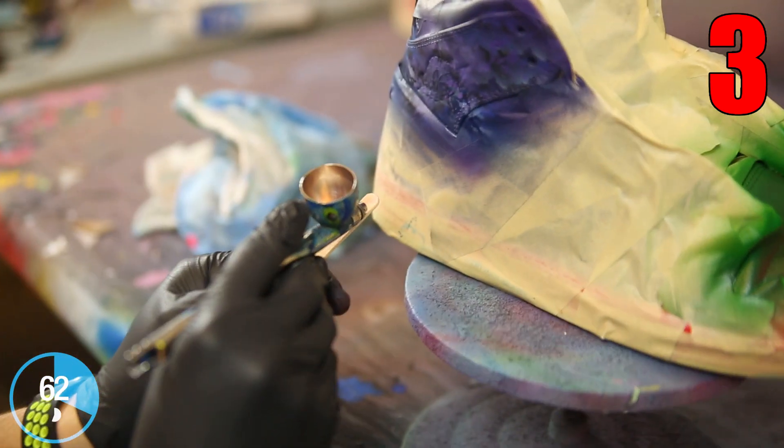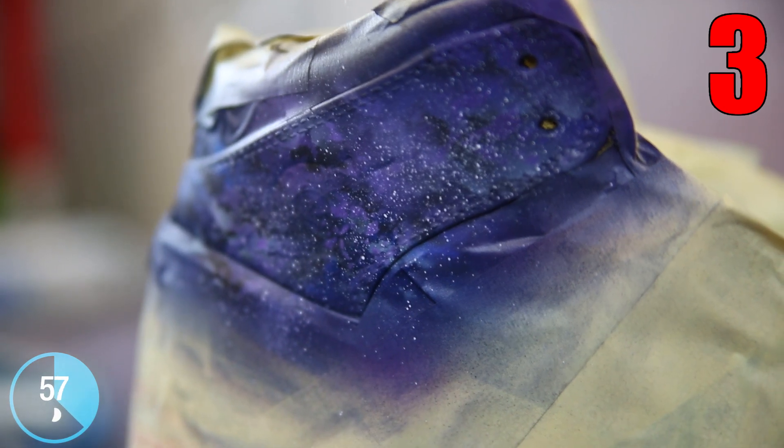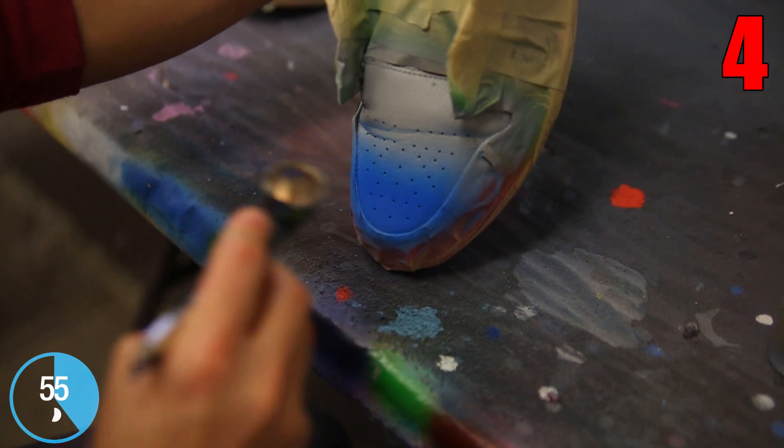All you need to do is place the popsicle stick near the tip of your gun and angle it up slightly towards the area you'd like the splatter to go.